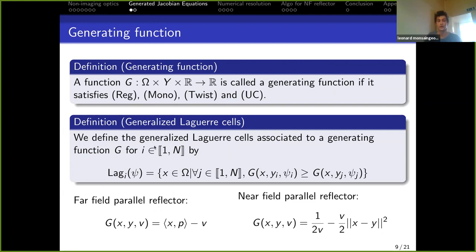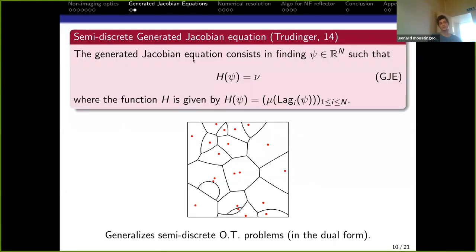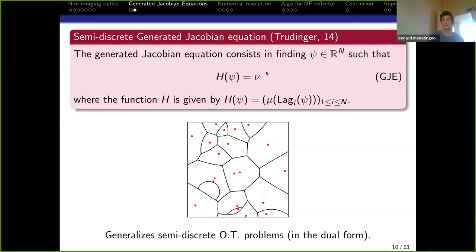Once we have the generating function, we define generalized Laguerre cells — the set of source points x where the generating function evaluated at target point y_i is greater than at all other target points y_j. The semi-discrete generated Jacobian equation consists in finding the variable c such that the mass of each Laguerre cell matches the target measure ν — a generalization of optimal transport in dual form.